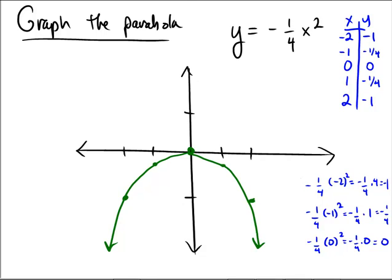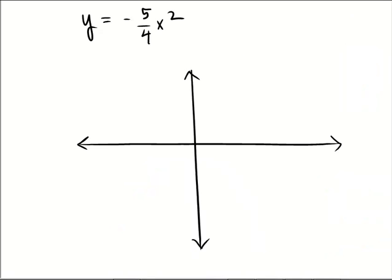So why don't you try one on your own here? Come over to y equals negative 5 fourths x squared, plot yourself about 5 points, and then see if you get a graph that looks like mine. And I'm going to do it here myself.